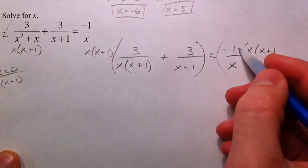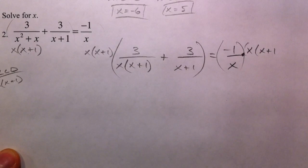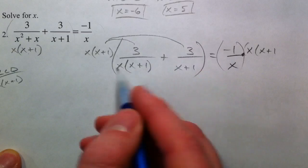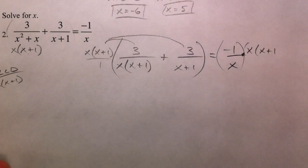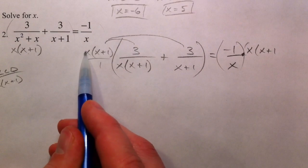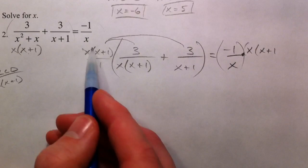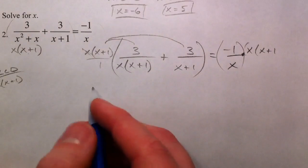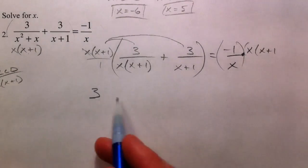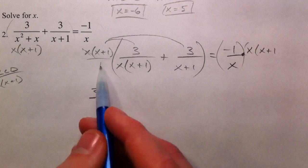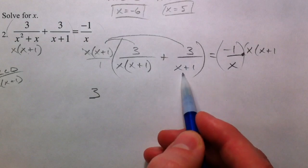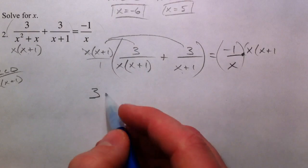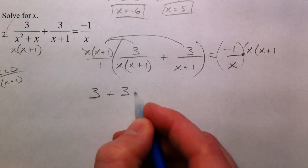That's the right-hand side. This x times x plus 1 gets distributed to both of these. You can imagine that this is the over 1 part. Notice the whole reason we did this was so that the x would cancel with the x and x plus 1 cancel with the x plus 1. Only thing that's left is that 3, the whole denominator cancelled out, and actually the whole numerator. This x times x plus 1 also gets distributed here, x plus 1's are going to cancel out, leaving 3 times that x that's out front. On the other side, x on top and bottom cancel out, you're left with negative 1 times x plus 1.